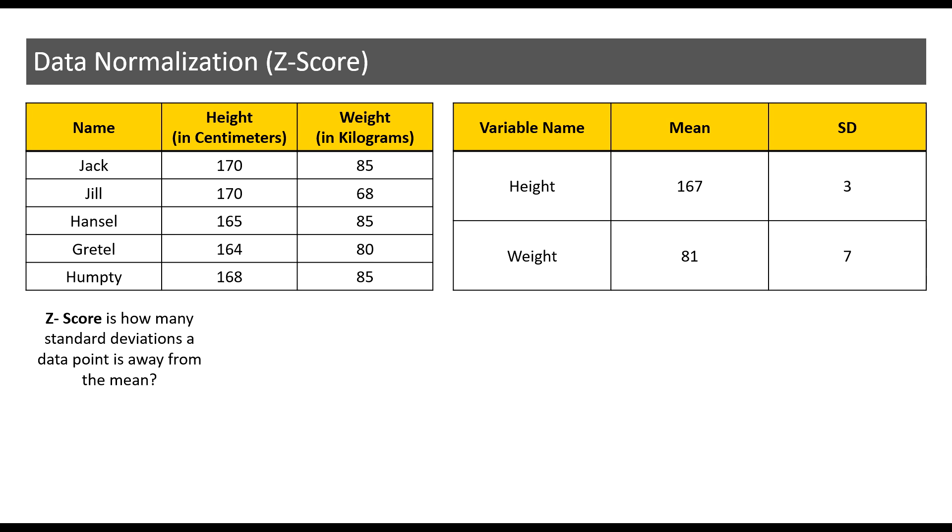Now what is the formula to calculate the Z-score? The formula is: it is just that given a particular observation minus the mean value divided by the standard deviation.